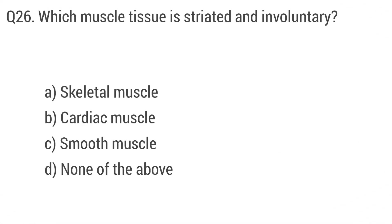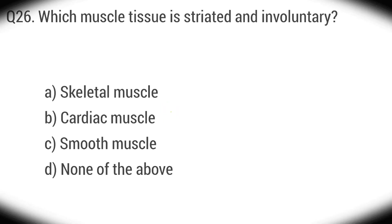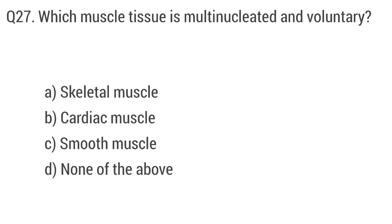Question 26: Which muscle tissue is striated and involuntary? The right answer is option B: cardiac muscle. Question 27: Which muscle tissue is multinucleated and voluntary? The right answer is option A: skeletal muscle.